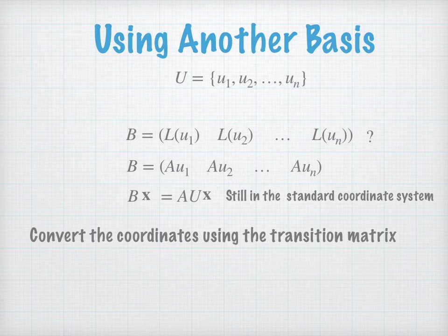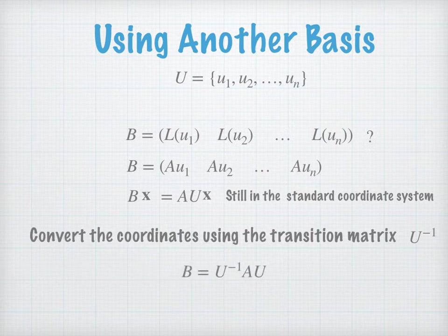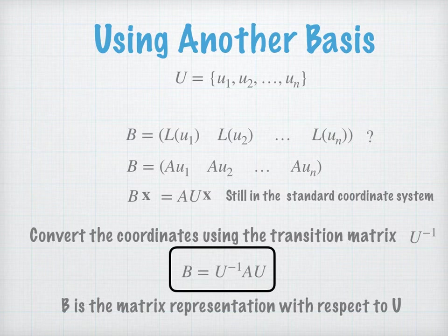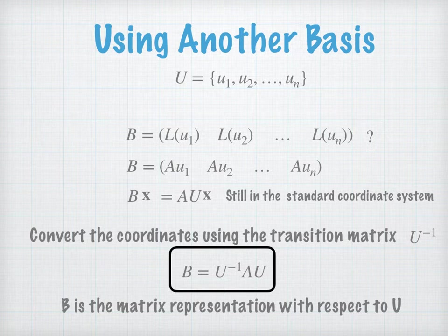That means you need to convert all the coordinates using the transition matrix. The transition matrix from the standard basis to the new basis U is U inverse. Once you have the transition matrix, you multiply it on the left of A times U to define B as a matrix representation for the same linear transformation L but with respect to U, the new basis. So B equals U inverse times A times U.